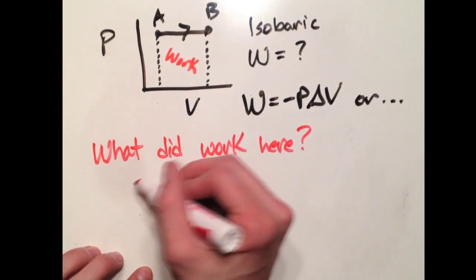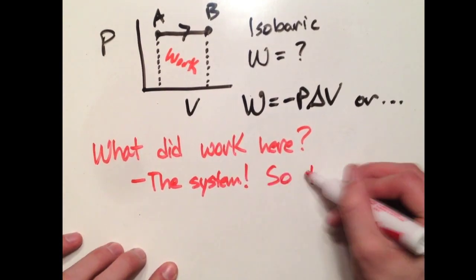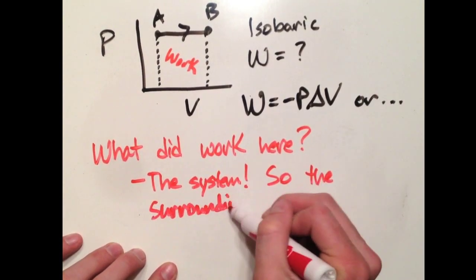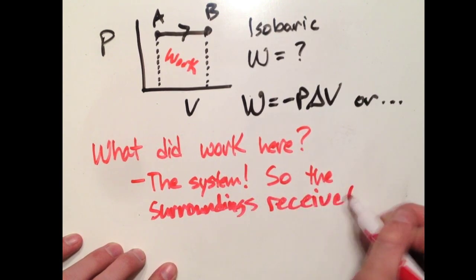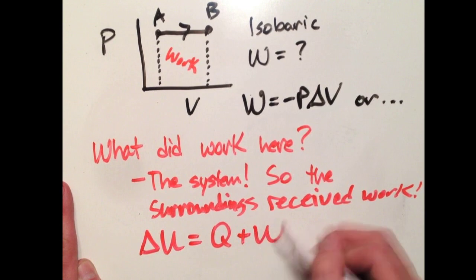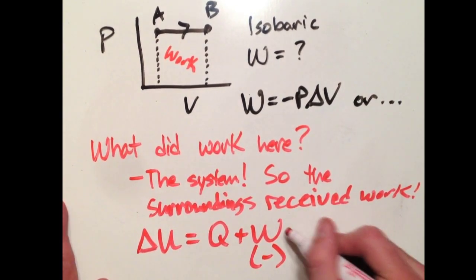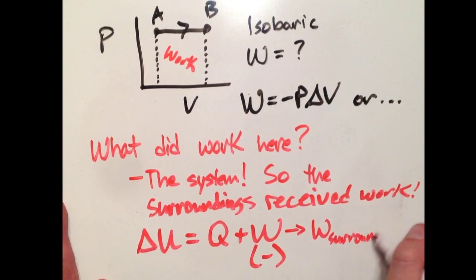But what did the work in going from A to B? I'll give you a second. Again, the system. Anytime you have an increase in volume, the system is doing the work so the surroundings receive that work. Looking at the first law of thermodynamics, Q plus W, that W has got to be negative because that is the work done by the surroundings.